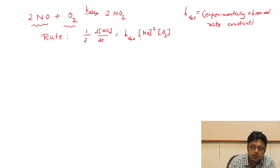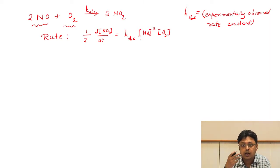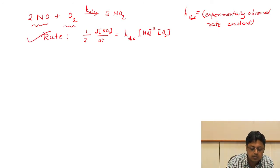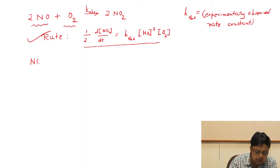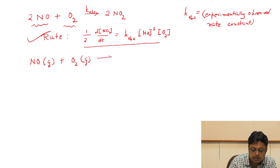One particular reaction can have very different proposed mechanisms, and each mechanism must satisfactorily explain the observed rate law, because that is what we get experimentally. We have to arrive at an expression that matches the experimentally observed rate law. Consider the first model: in step 1, nitric oxide gas and oxygen gas react in a bimolecular reaction to form NO₃ as an intermediate. NO₃ does not appear in the stoichiometric equation, so it is a reaction intermediate that we do not observe.